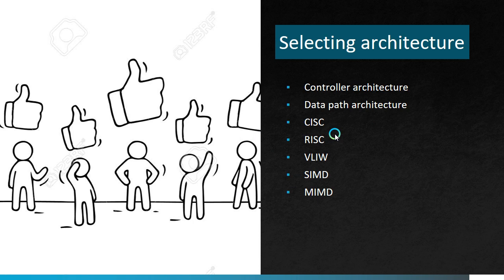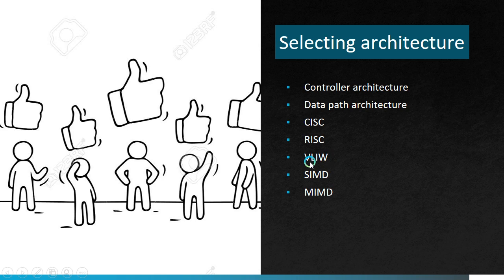CISC stands for Complex Instruction Set Computing. In CISC architecture, it is possible for an instruction set to perform a large complex operation with a single instruction. RISC stands for Reduced Instruction Set Computing; in this method, many instructions are used to represent even a simple operation. VLIW stands for Very Long Instruction Word, where one standard instruction for a functional unit of the data path is required, supporting operations like ALUs and multipliers. SIMD and MIMD are collectively known as parallel architectures — SIMD means Single Instruction Multiple Data, and MIMD means Multiple Instruction Multiple Data; both perform parallel processing.